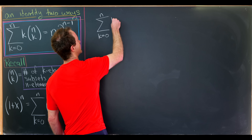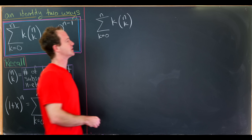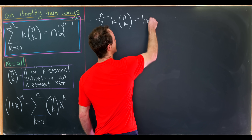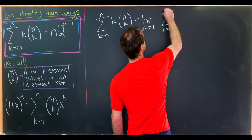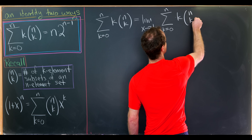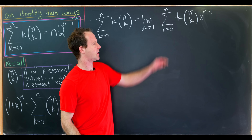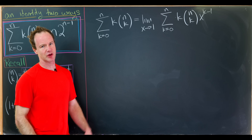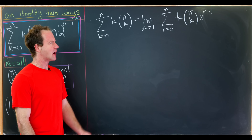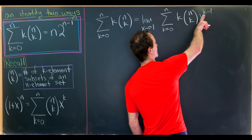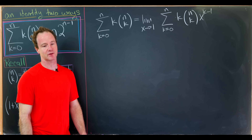We have the sum as k goes from 0 to n of k times the binomial coefficient n choose k. We can write this as the limit as x goes to 1 of the sum as k goes from 0 to n of k times n choose k times x to the k minus 1. Notice that this is just a polynomial, so taking a limit is really just an evaluation, but the cleanest way to write it is by adding this limit. I've got this factor k and this exponent k minus 1, and I chose that exponent for a reason.